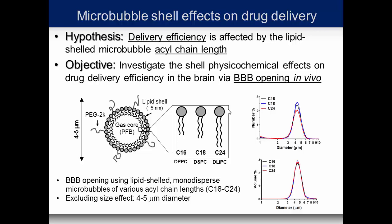These are the three different shells we have: DPPC (C16), DSPC (C18), and DBPC (C24). As mentioned, we controlled for size effects at 4 to 5 microns, and you can see the distributions from the Multisizer centered around 4 to 5 microns for all the different shells, both for the number fraction and the volume fraction.